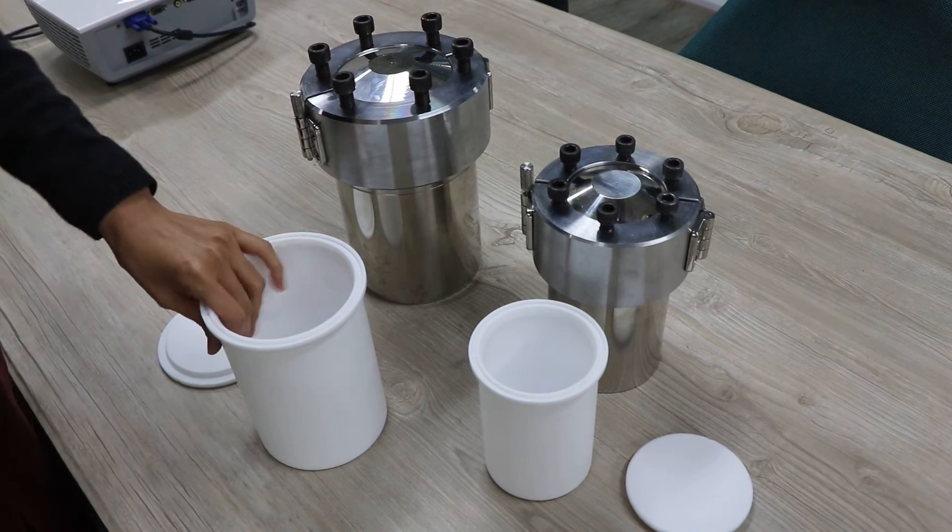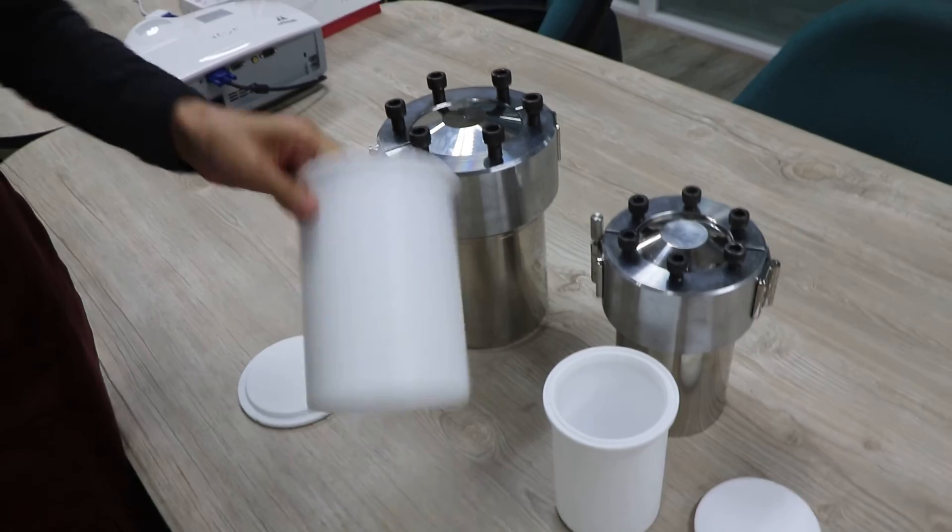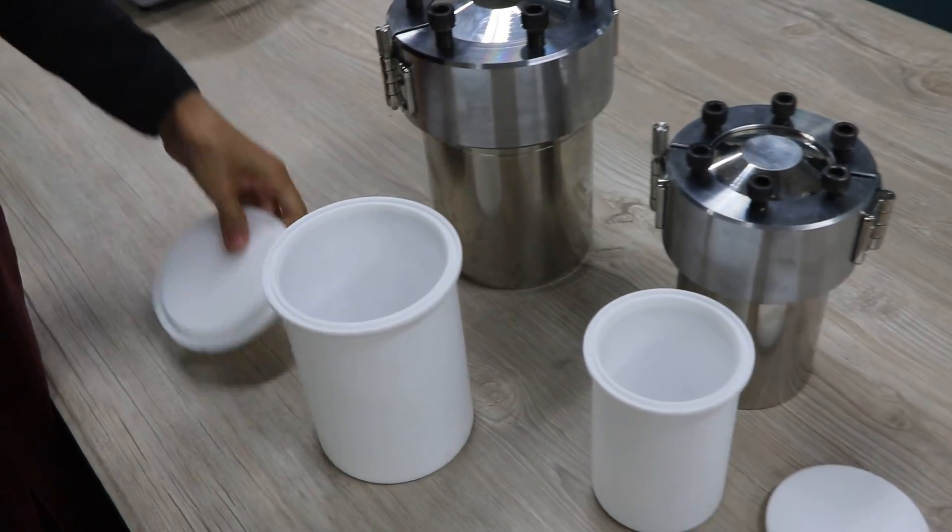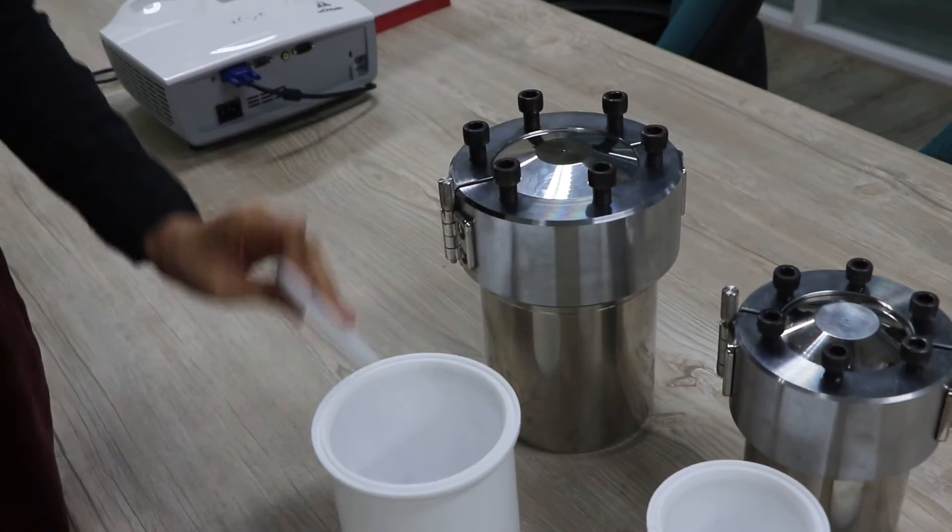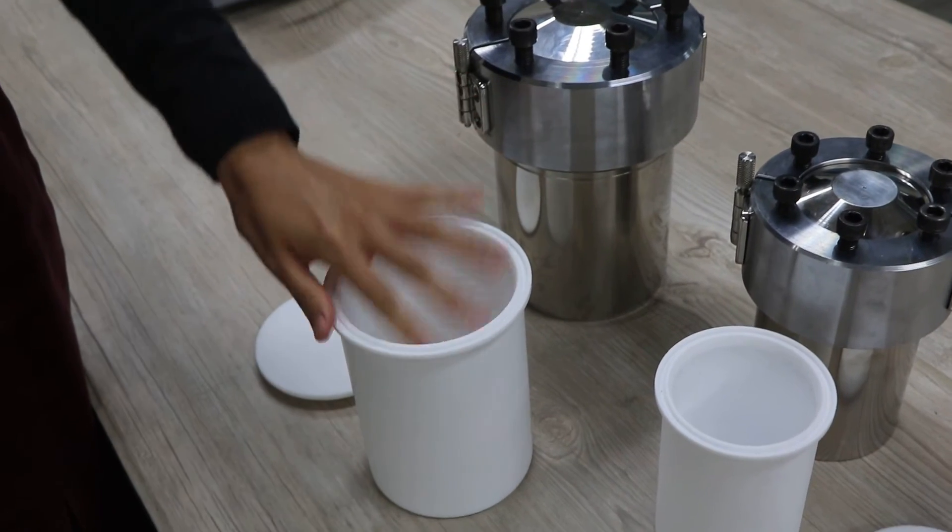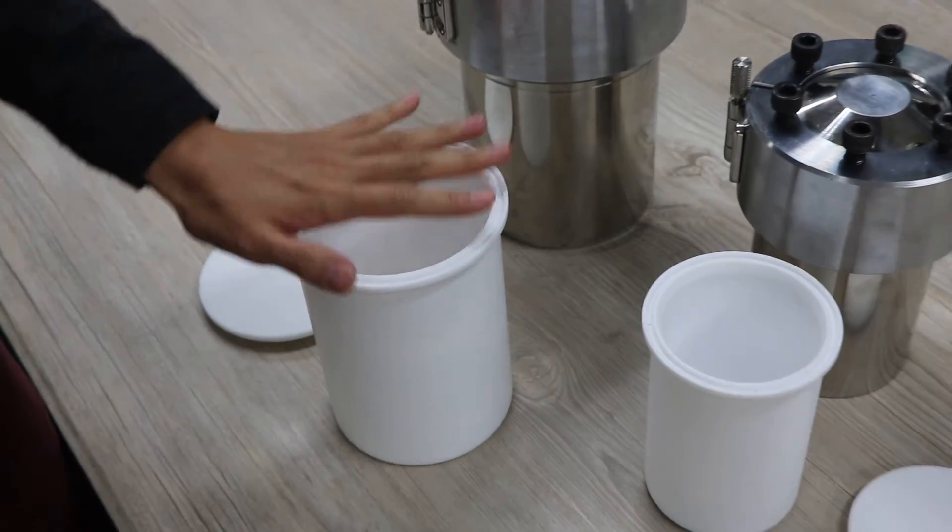This is Teflon liner for reactor and for cover. The Teflon liner is in order to prevent corrosion.